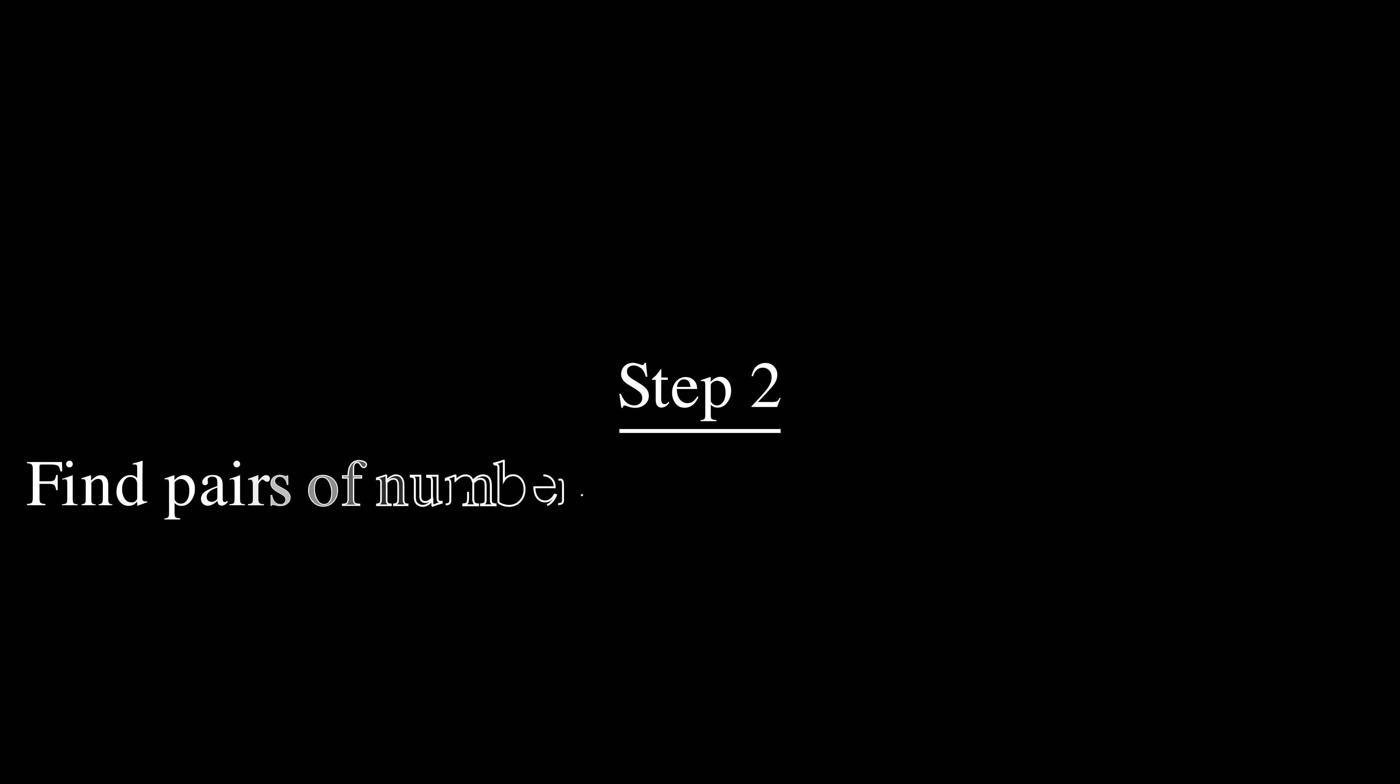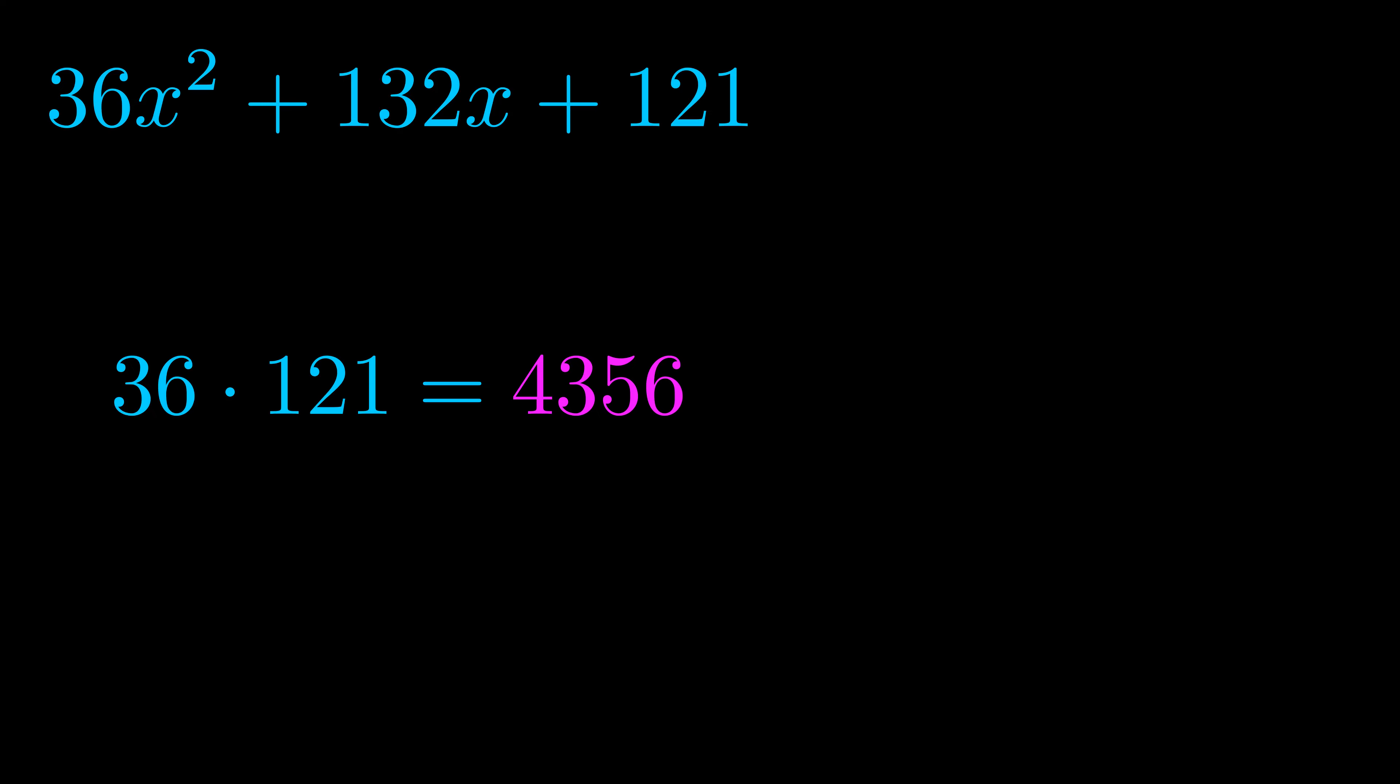Step two is to try to find all of the pairs which multiply to this number. Now it turns out you don't really need to find all of them, but go ahead and write down as many numbers as you can that multiply to the magenta value for now. Pause the video and resume when you're ready to continue. Okay, here's what I came up with.